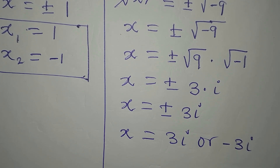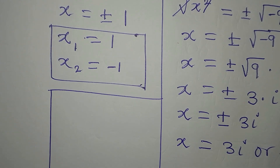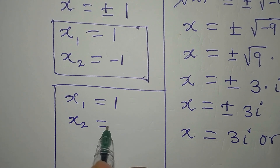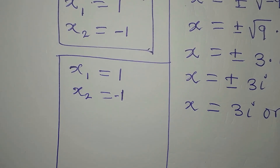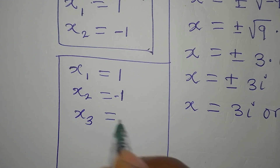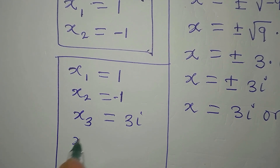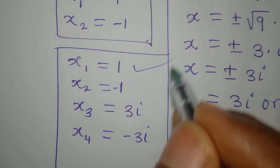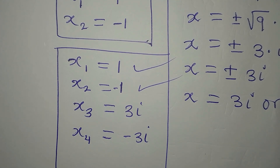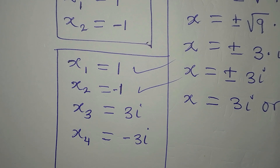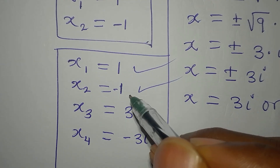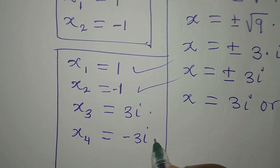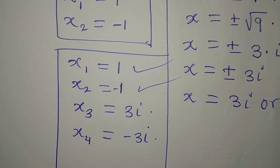Here we have two more solutions: x₃ = 3i and x₄ = -3i. Bringing all four solutions together: x₁ = 1, x₂ = -1, x₃ = 3i, x₄ = -3i. Note that x₁ and x₂ are the real solutions, while x₃ and x₄ are imaginary solutions. Thank you for watching.